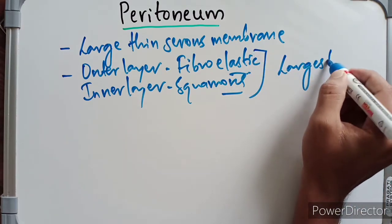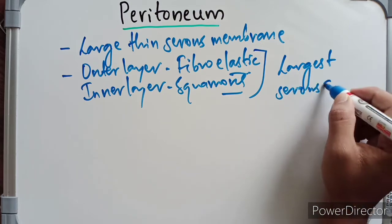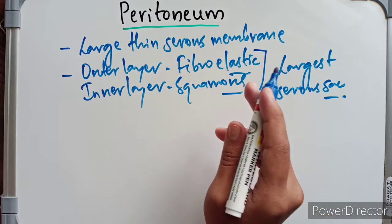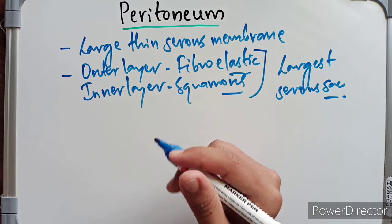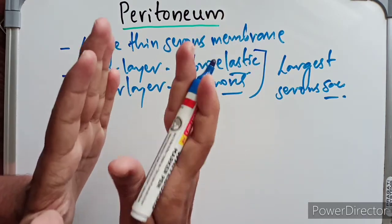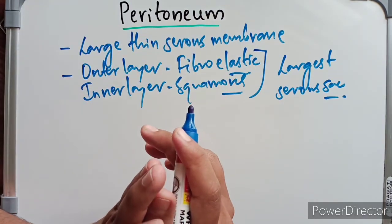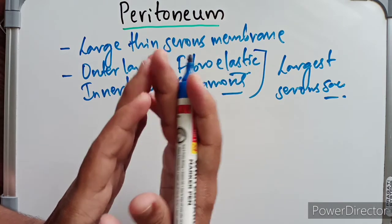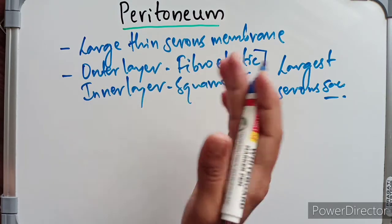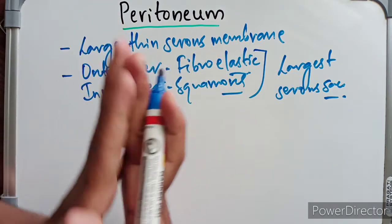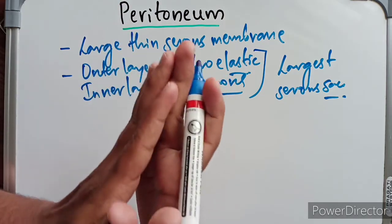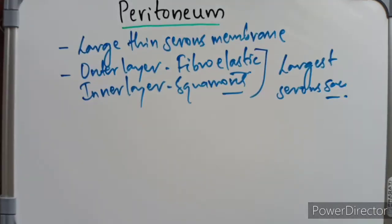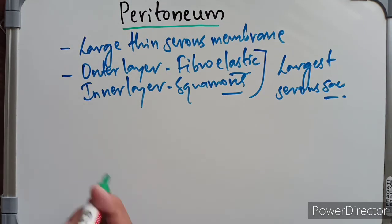The peritoneum is similar to the pleura and serous pericardium because it consists of both parietal and visceral layers. These layers are separated by a potential space known as the peritoneal cavity, which we will discuss in the next video. This cavity produces a thin serous film of fluid that lubricates the two layers of the peritoneum, aiding mobility of the small viscera in the abdominal region.